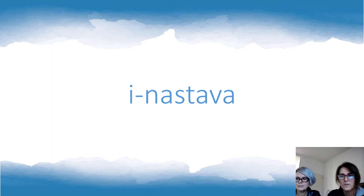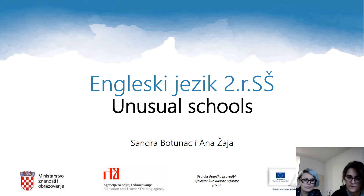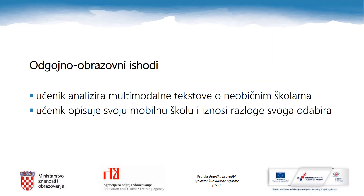Hello everyone and welcome to InNastava. This is an English lesson for the second grade of high school and our topic today is Unusual Schools. Our names are Sandra and Anna and we will be your teachers today. By the end of today's lesson you will be able to understand the text about unusual schools, answer the questions, describe your mobile school and give the reasons for your choice.